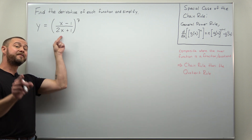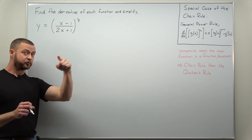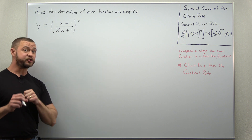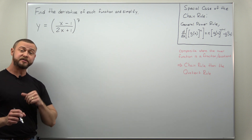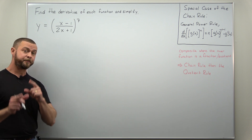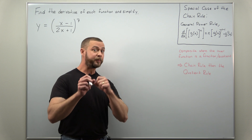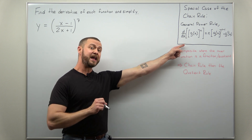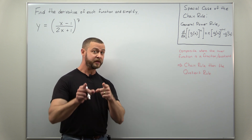First we have a composite — a function raised to a power — that's where we're going to apply the chain rule. But when we differentiate the inside, because it's a fraction, that's where we'll use the quotient rule. To speed up our calculations when we apply the chain rule, we're going to use the special case called the general power rule.